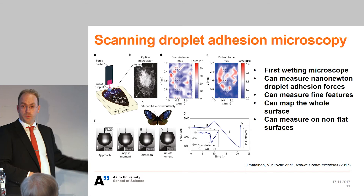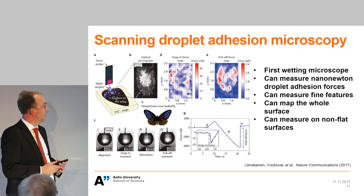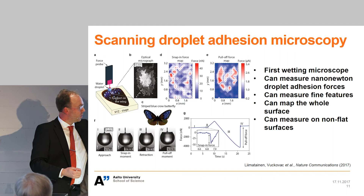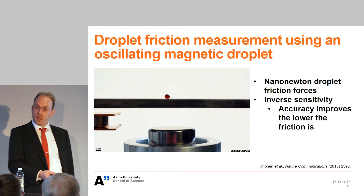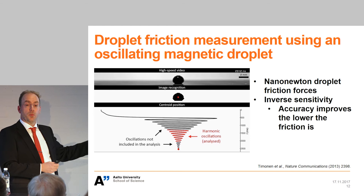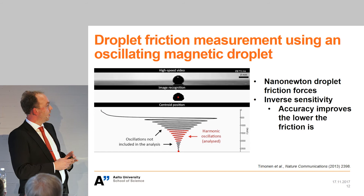Another method we have developed measures the friction of a surface. We use a water droplet containing a very small amount of magnetic nanoparticles, making it attracted to a magnet. When attracted, it starts oscillating over the surface. The oscillations decay — their amplitude is reduced — and by recording this, we can measure friction forces with nanonewton precision. Importantly, this method has inverse sensitivity: the more repellent the surface is, the more accurate the measurement becomes.